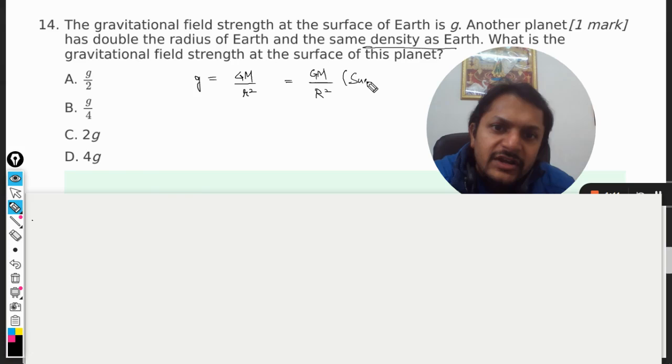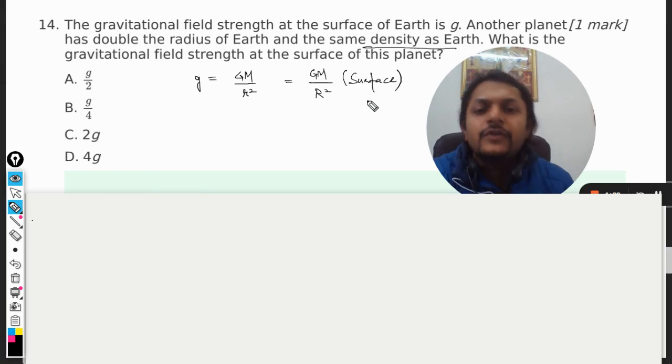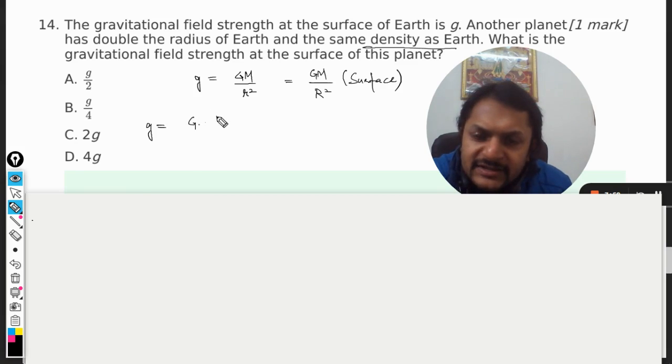So it can be written as - what will be the volume? 4 by 3 pi r cube. Now this is the formula for the volume of a sphere, so 4 by 3 pi r cube multiply by density of the earth divided by r square.